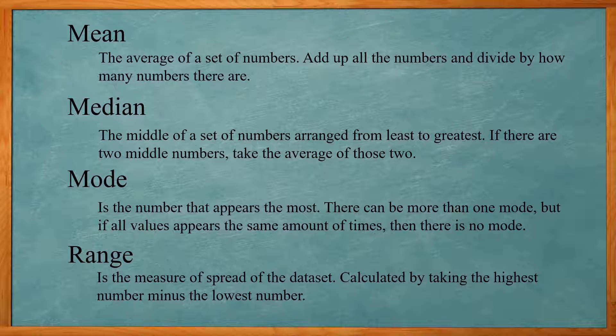And for the median, this is just the middle of the set of numbers that range from least to greatest. If there are two numbers in the middle, you'll take the average of those two numbers. So if you have an odd number of numbers, you will have one in the middle. But if you have an even number of numbers, you have two in the middle and you have to take the average of those two numbers in the middle.